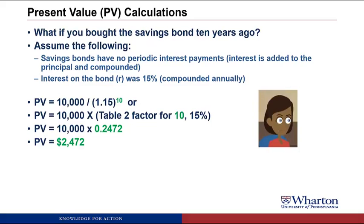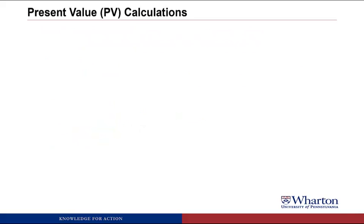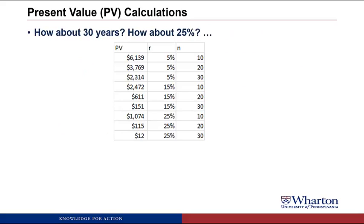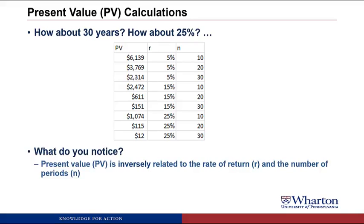This pattern does generalize. Looking at 5% and 25% rates across 20 and 30 years: at 5%, as the number of periods gets bigger, present value gets smaller. At 25%, the same pattern holds. And for a given number of years like 30, as the rate goes from 5% to 15% to 25%, present value gets smaller. Present value is inversely related to both the rate of return and the number of periods — as R or N goes up, present value comes down. Notably, at 25% interest over 30 years, you would only need to invest $12 to have $10,000 today.